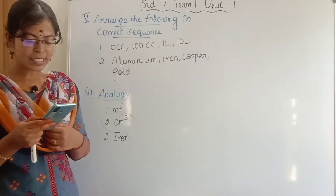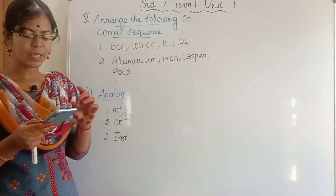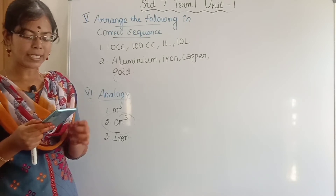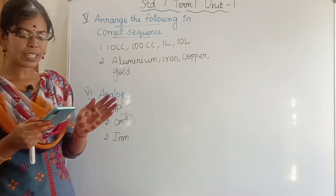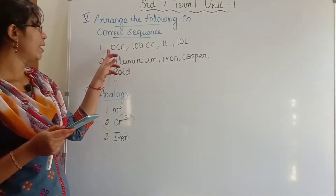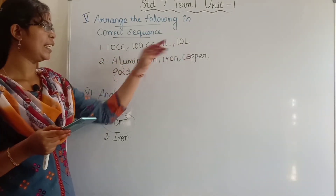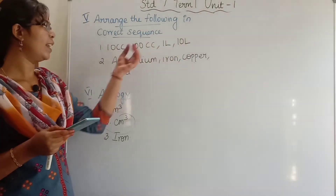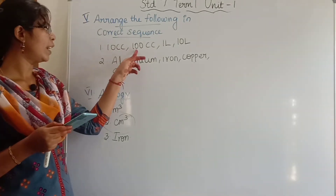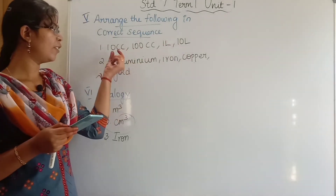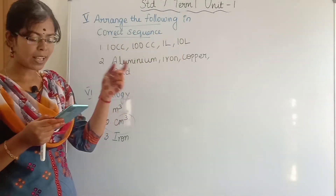Fifth section: arrange the following in correct sequence. First question — arrange 1 litre, 100cc, 10 litres, 10cc in order. The correct ascending order is: 10cc, 100cc, 1 litre, 10 litres — which is equivalent to 10ml, 100ml, 1 litre, 10 litres.